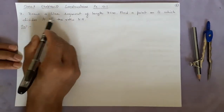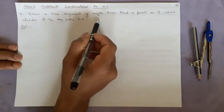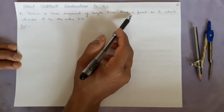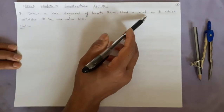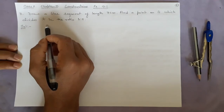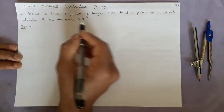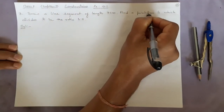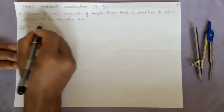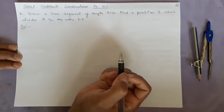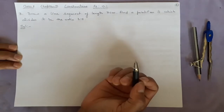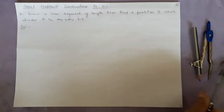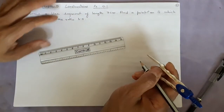Here we have to draw a line segment of length 7 cm and find a point P on it which divides it in the ratio 3 to 5. Same question, just numbers have changed, we will try it like this.